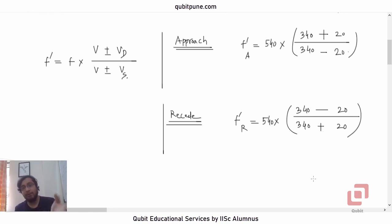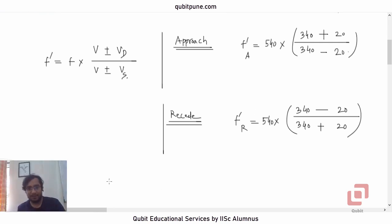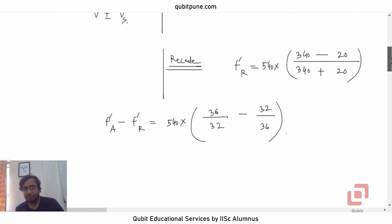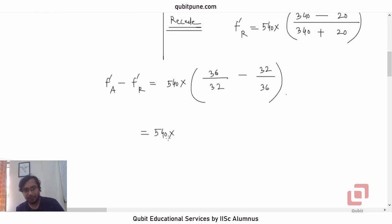What we want is the difference f-prime-A minus f-prime-R. Since f-prime-A is greater than f-prime-R, we calculate: f-prime-A − f-prime-R = 540 × [360/320 − 320/360] = 540 × (9/8 − 8/9).